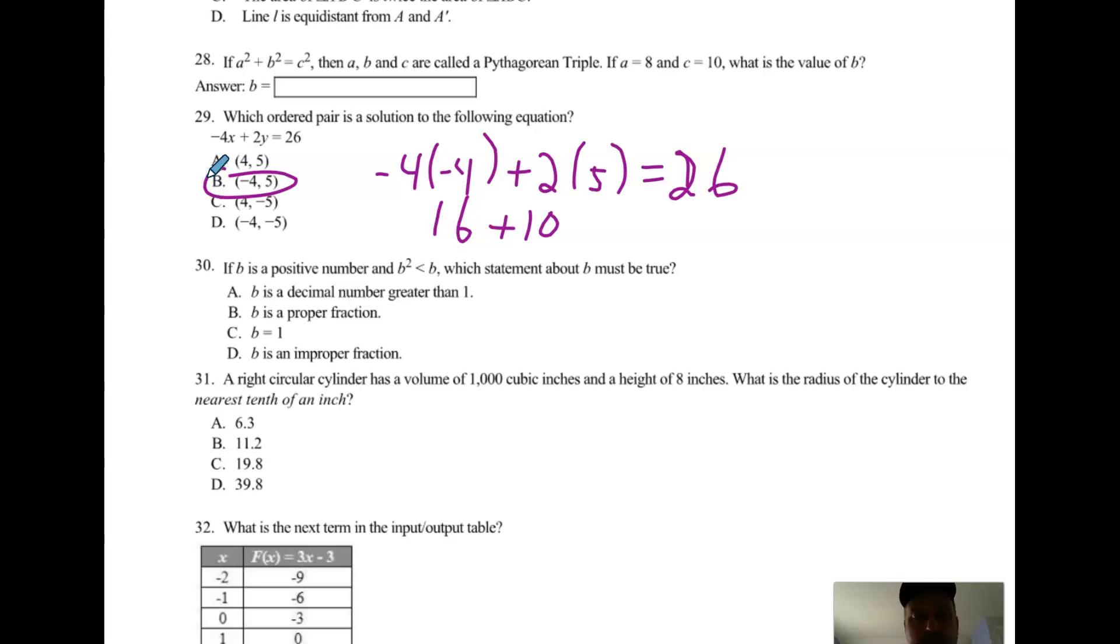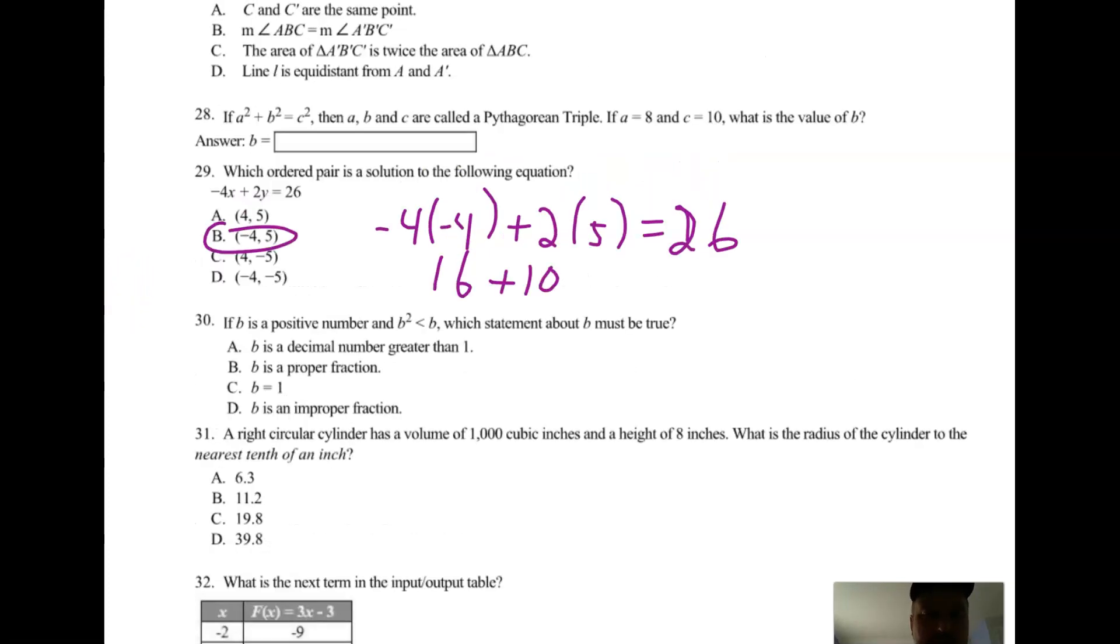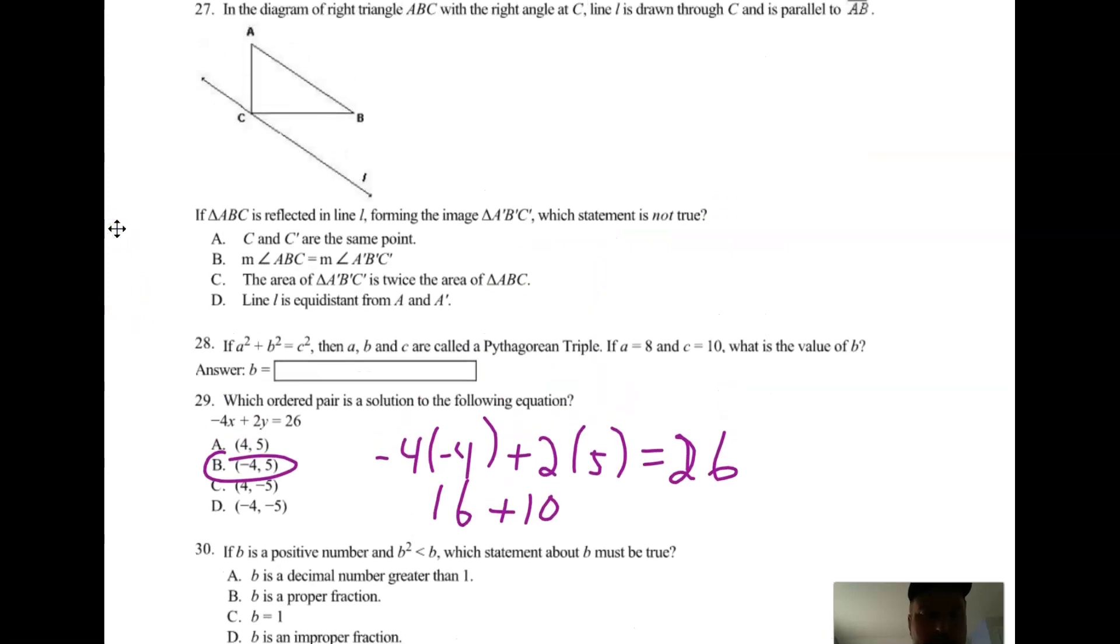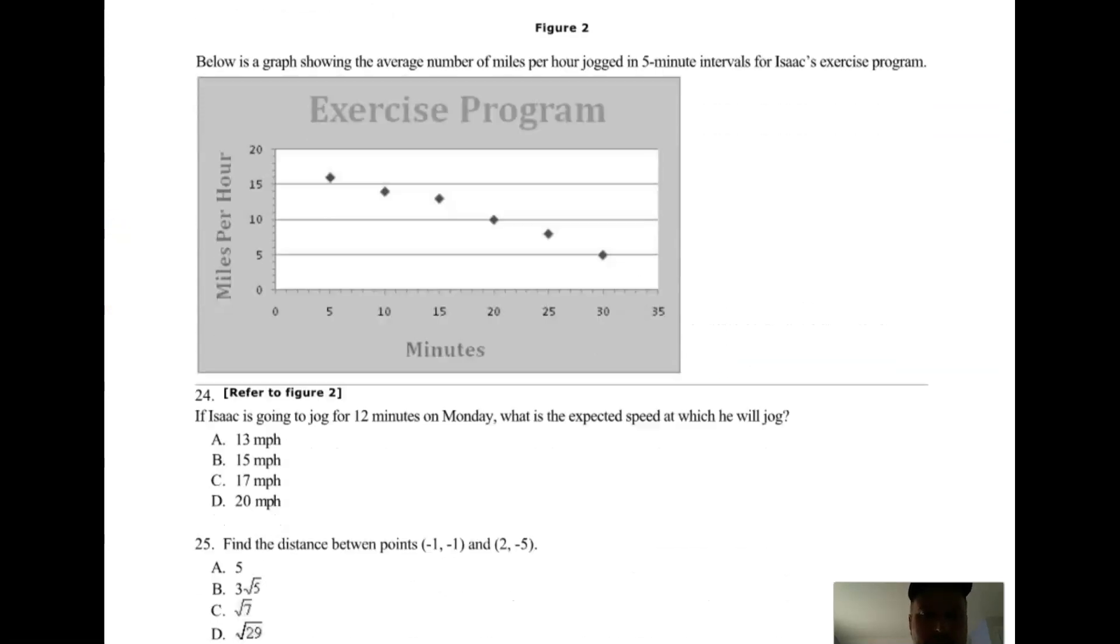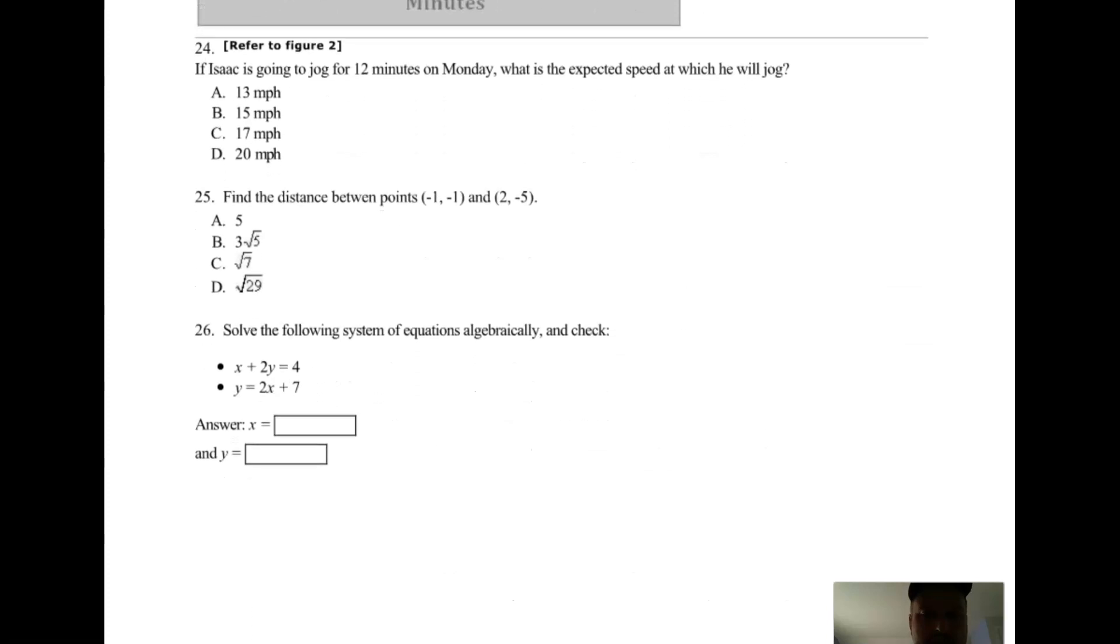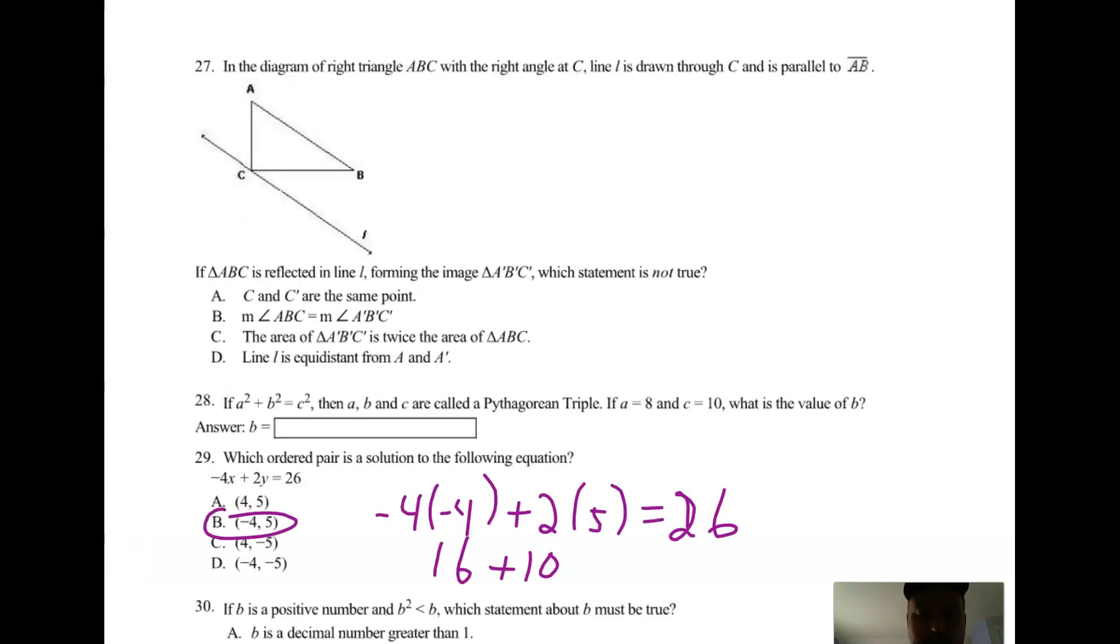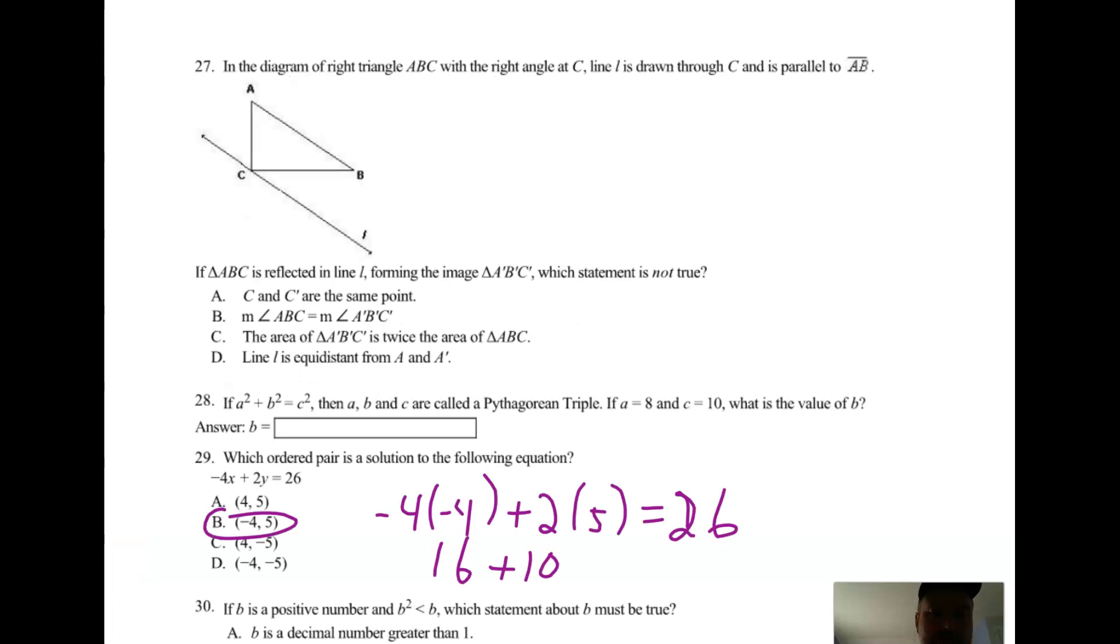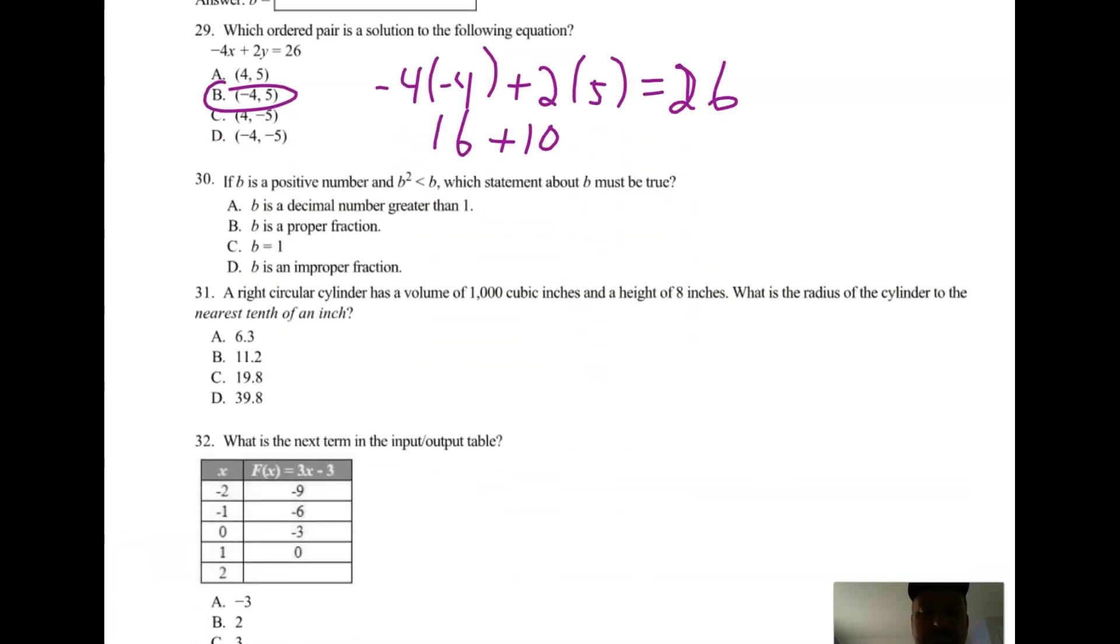And then number 30. So that's the only one you didn't have to do. I'm going to lose my mind. Maybe you didn't have to do 30. I lost my piece of paper. Well, if B is a positive number...